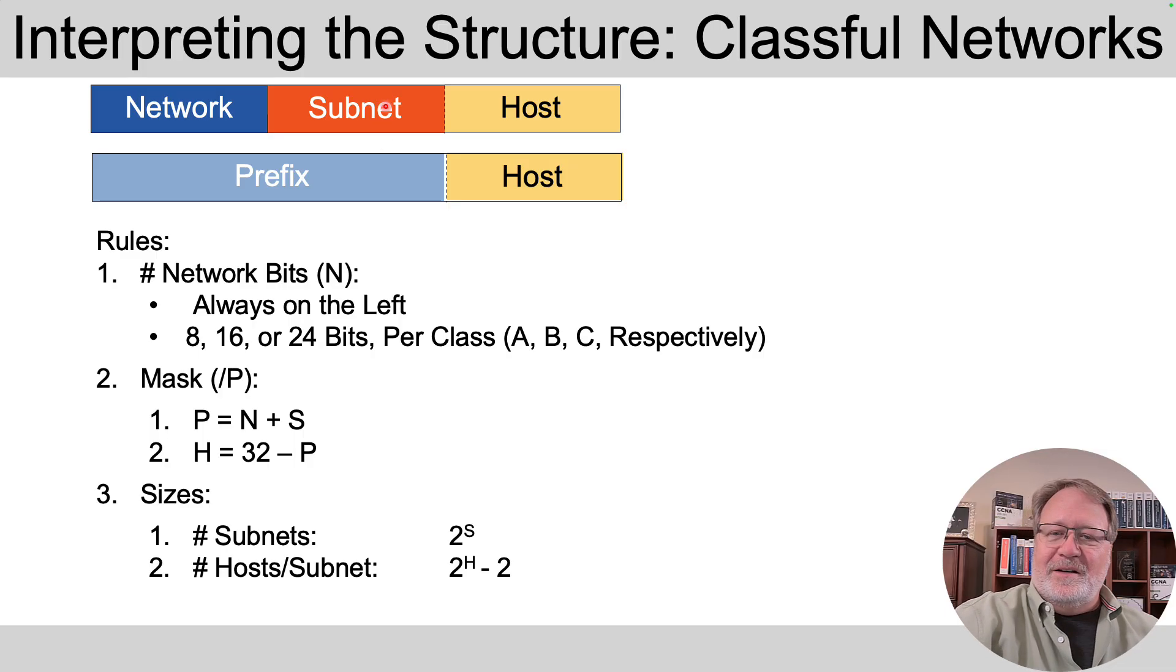So you can find the size of the subnet field. The host field is whatever you'd have to add to P to get to 32, or mathematically, 32 minus P will give you the number of host bits. Then you can do those calculations that I just mentioned to you.